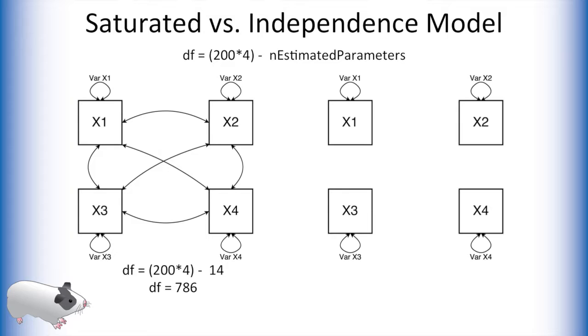The saturated model has four variance paths, six covariance paths, and four means paths that are not shown here. Thus, the model has 786 degrees of freedom. The independence model has six fewer paths, and thus has more degrees of freedom than the saturated model.